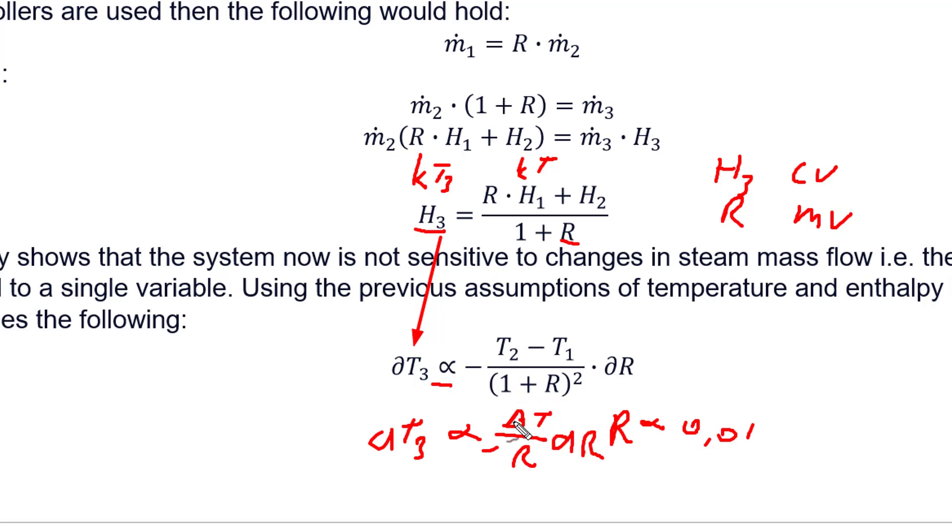You could almost write ∂T3 is proportional to ΔT minus R·∂R. In other words, we have a linear equation—this is linear because that should be a one. So that's basically a linear equation. This denominator hardly changes significantly and it makes it insensitive. So it makes more sense to control the system based on ratio. How would one do that on a P&ID? That's the next question.